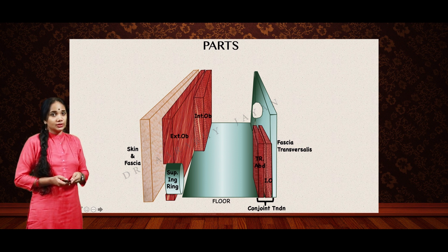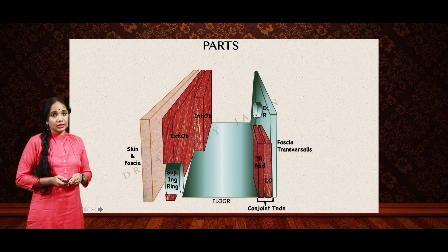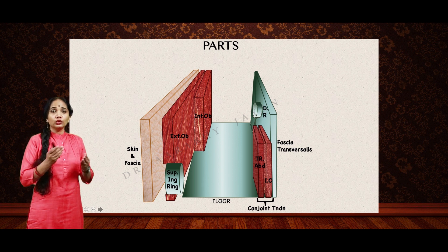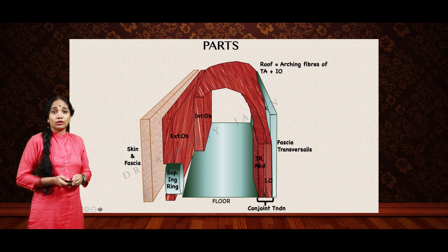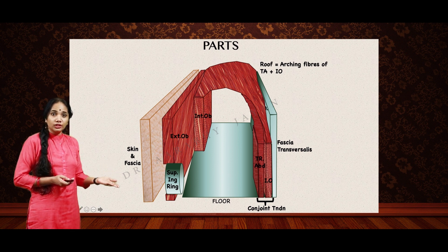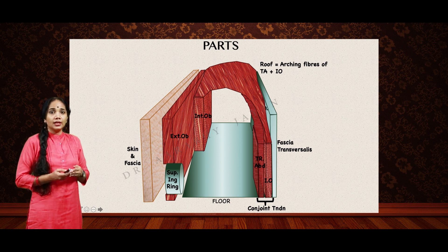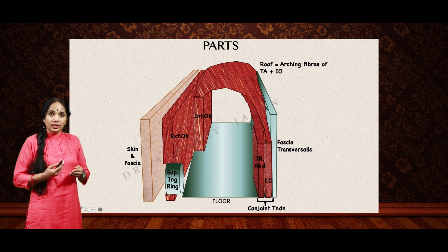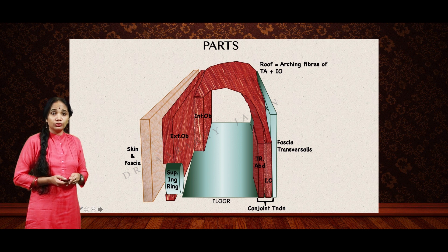The defect in the fascia transversalis is the deep inguinal ring. The roof of the inguinal canal is formed by arching fibers crossing over from the internal oblique origin, going forwards to backwards medially to form the conjoined tendon along with the fibers of the transversus abdominis, and together the conjoined tendon inserts onto the pecten pubis — that forms the roof.